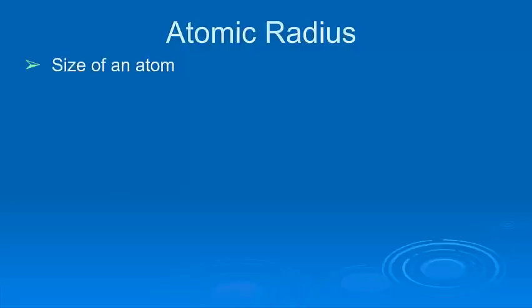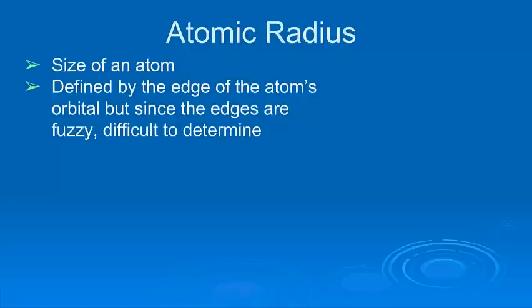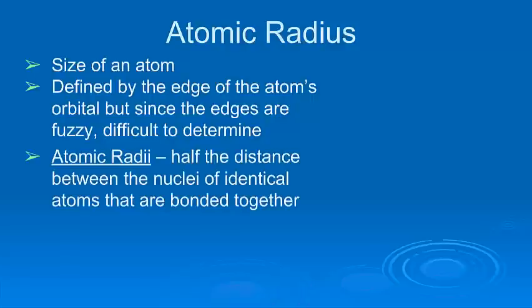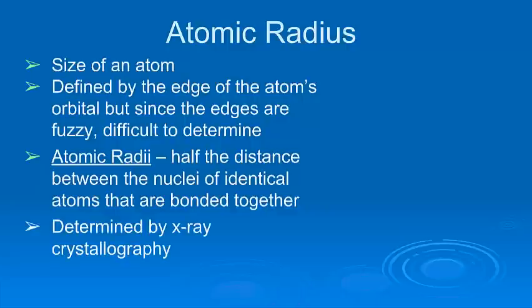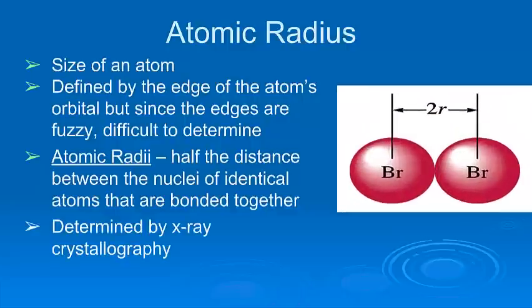So, atomic radius. First thing, we're basically talking about the size of an atom. Because the size of the atom is defined by the edge of the atom's orbital, and those edges are very, very fuzzy, they're hard to figure out where they are. In order to figure out how big an atom is, the only way to really do it is to take two atoms that are bonded together. If they're bonded together, then they're going to be touching. Their orbitals will be touching.